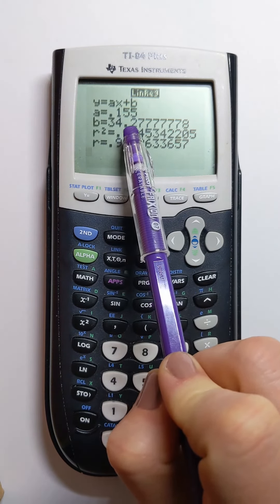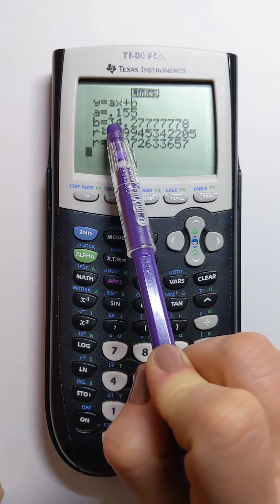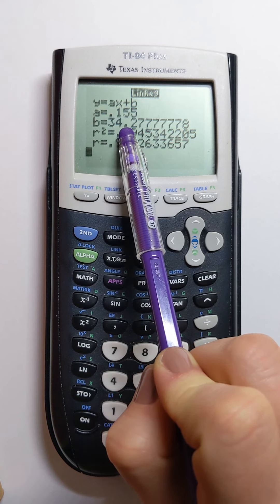Let's talk about the rounding. Let's say we're going to round to two decimal places. Then a becomes 0.16 and b becomes 34.28.